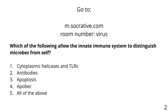Quiz question: which of the following allow the innate immune system to distinguish microbes from self? Cytoplasmic helicases like RIG-I and toll-like receptors, antibodies, apoptosis, APOBEC, or all of the above? 80% got the right answer: cytoplasmic helicases and toll-like receptors. These are the sensors of the innate immune system. Antibodies are adaptive, and APOBEC is an intrinsic defense that doesn't distinguish—it just acts directly on DNA because it's packaged in virus particles.